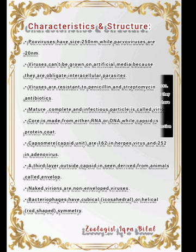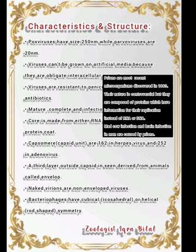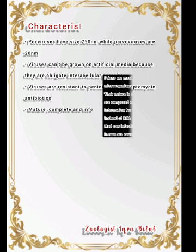Prions are the most recently discovered microorganisms, discovered in 1983. Their nature is controversial because most scientists believe they are only protein. They are composed of protein which carries information for their replication instead of RNA or DNA. Every organism has DNA or RNA as genetic material, but in prions, protein serves as the genetic material. Prion infections cause brain infections in humans.